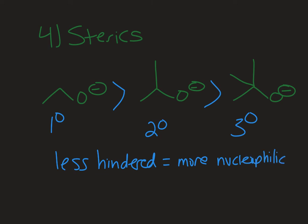So if we did a competition experiment where we had all three of these nucleophiles present and one electrophile, we'd see that the nucleophilicity or the rate of attack for the least hindered one would be the fastest. And that would be the predominant product that we would see.